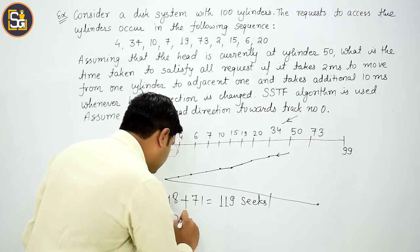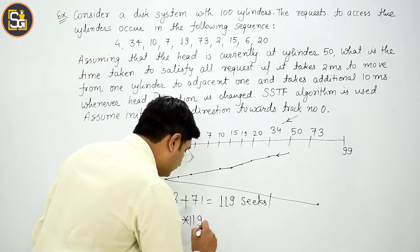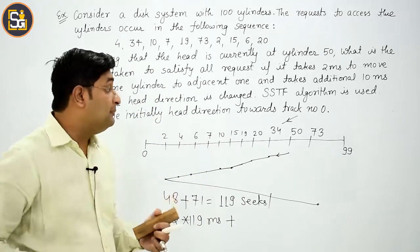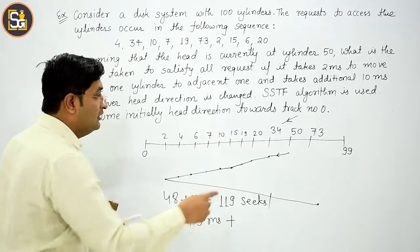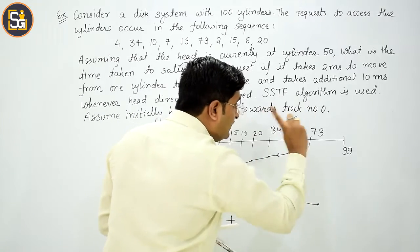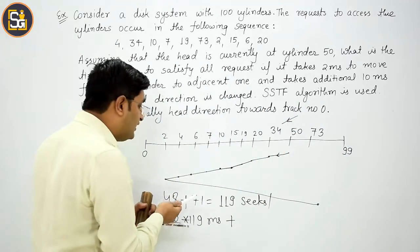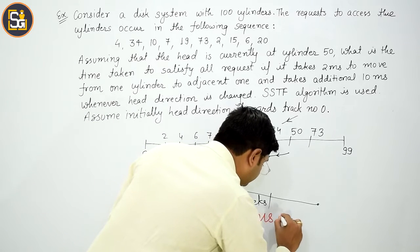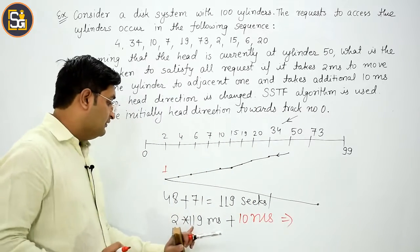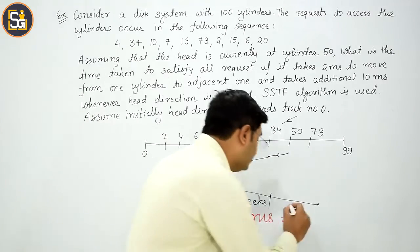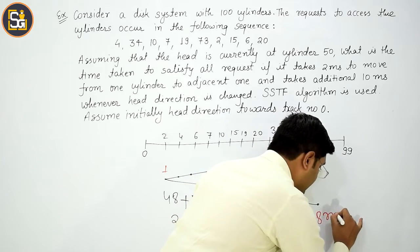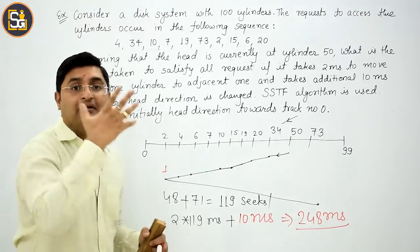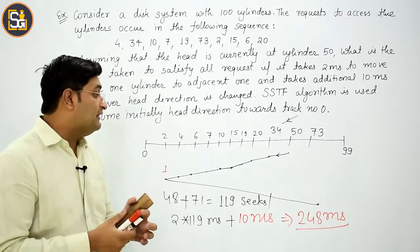Total is 119. So 119 into 2 milliseconds plus each head movement has an additional 10 milliseconds. Initially the head hasn't moved, so I'll count one head movement, that is 10 milliseconds. Clear? So 119 into 2 is 238 plus 10 equals 248 milliseconds.